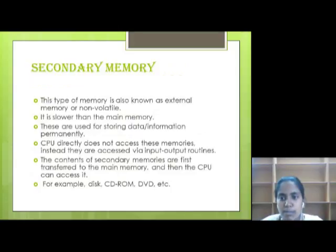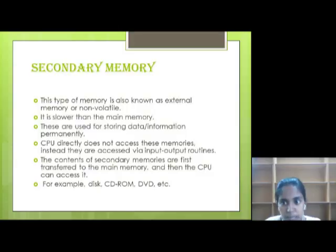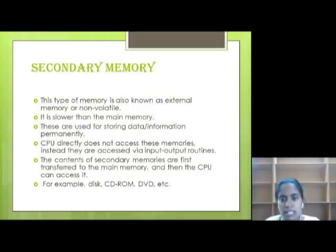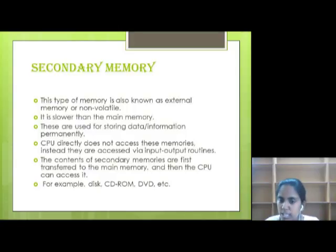Now we will discuss about secondary memory. This type of memory is also known as external memory or non-volatile memory. It is slower than the main memory. These are used for storing data and information permanently. The CPU does not directly access these memories; instead, they are accessed via input-output routines. The content of secondary memories is first transferred to the main memory, and then the CPU can access it. For example, disk, CD-ROM, DVD, etc. Secondary memory is also called external memory and non-volatile memory.